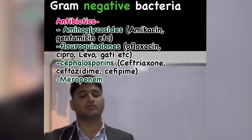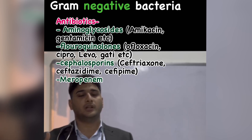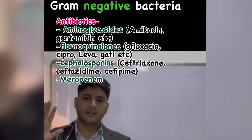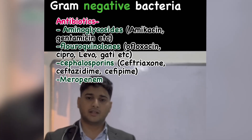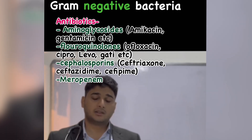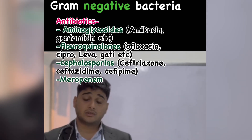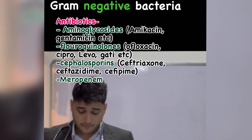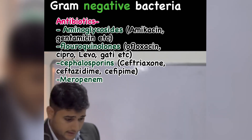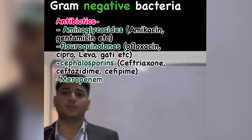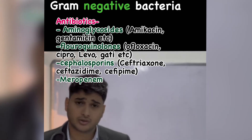For antibiotic selection in gram-negative infections: first, aminoglycosides like amikacin and gentamicin were used by older clinicians. Then there are fluoroquinolones like norfloxacin, ofloxacin, ciprofloxacin, moxifloxacin, and gatifloxacin. We don't use these much anymore because there is evolving resistance to fluoroquinolones.